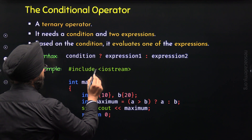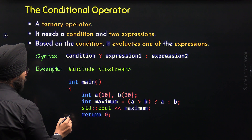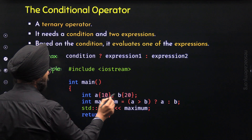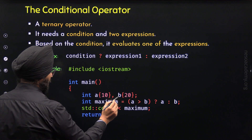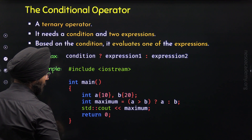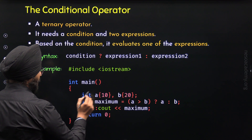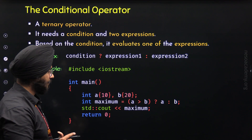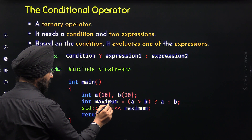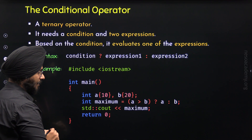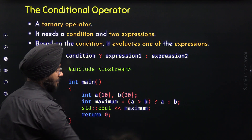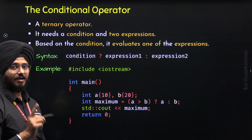Here I have included the iostream header file because in this main function I am using std::cout. Inside this main function, I have defined two integer variables a and b and initialized them with values 10 and 20. After this, I have defined this variable maximum of type integer, and I want to assign the result of this conditional expression to it.